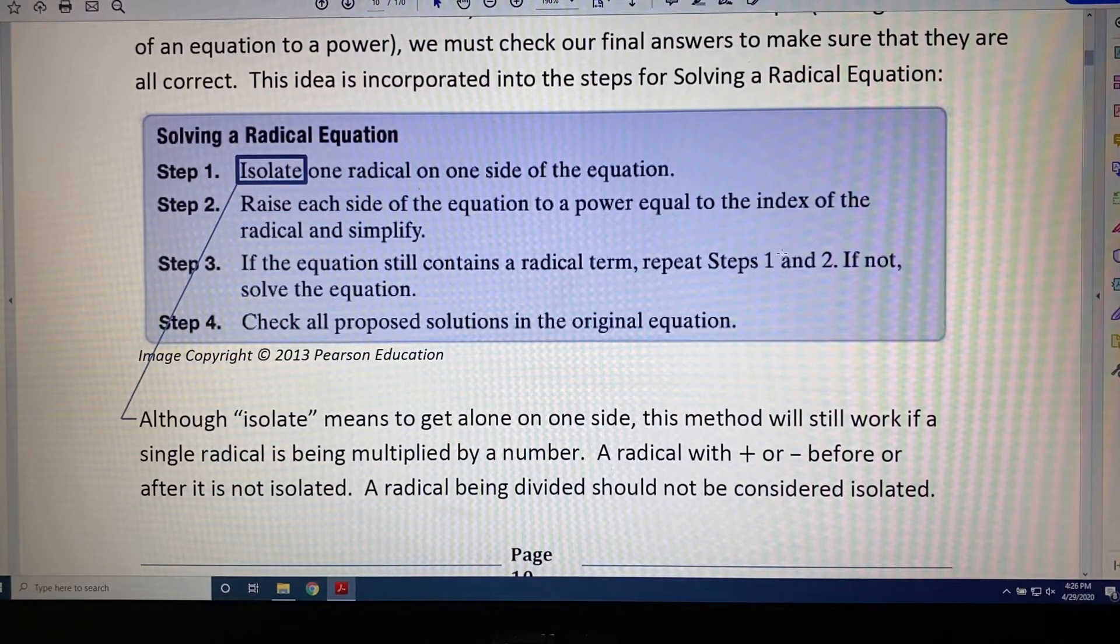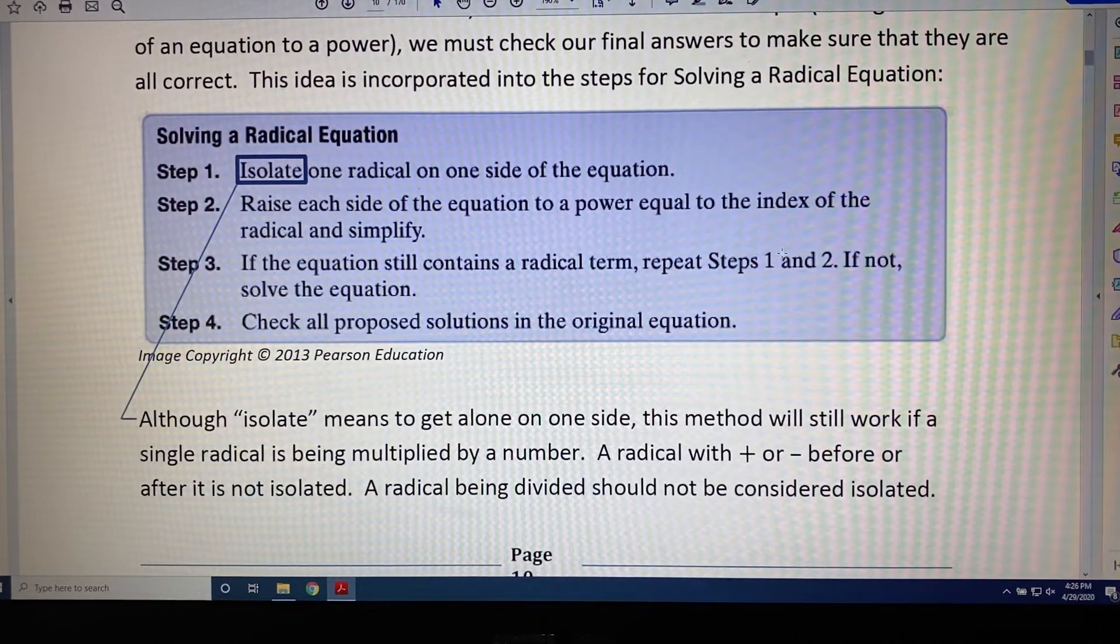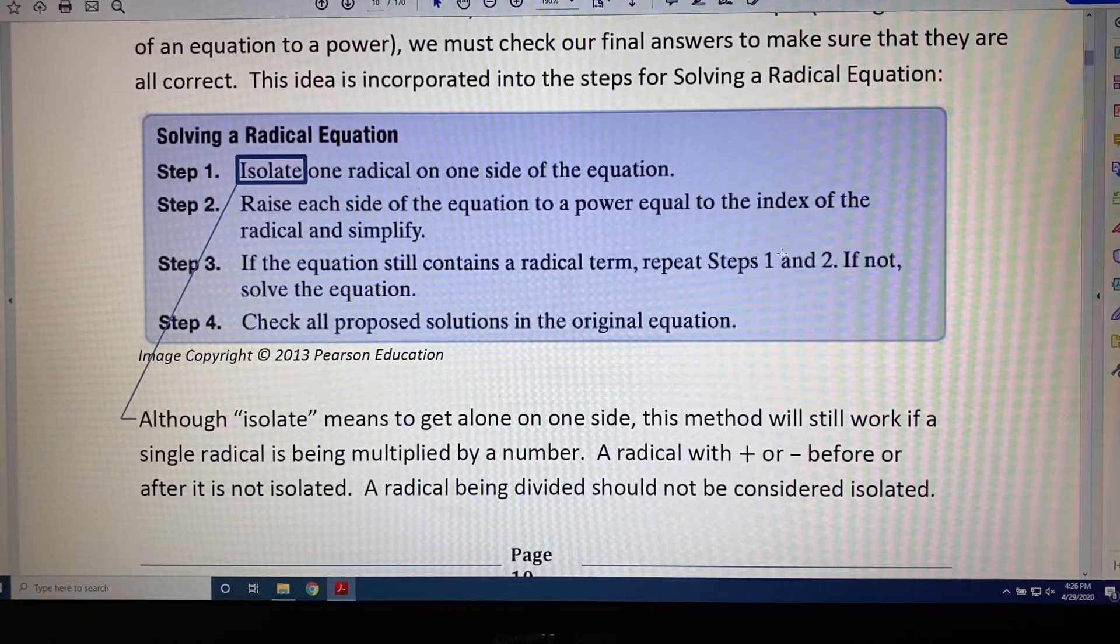Step 3: If the equation still contains a radical term, repeat steps 1 and 2. If not, solve the equation. Step 4: Check all proposed solutions in the original equation.